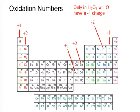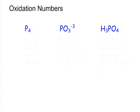Only in hydrogen peroxide or sodium peroxide, something where it's H2O2, will oxygen have a negative one charge. So now that we know that, we can figure out our oxidation numbers of any kind of compound possible.